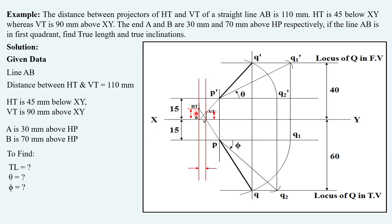HT and VT locations are given, so this distance of HT and this distance of VT are given to us. Also the front view location of endpoint A and front view location of endpoint B is also given to us.